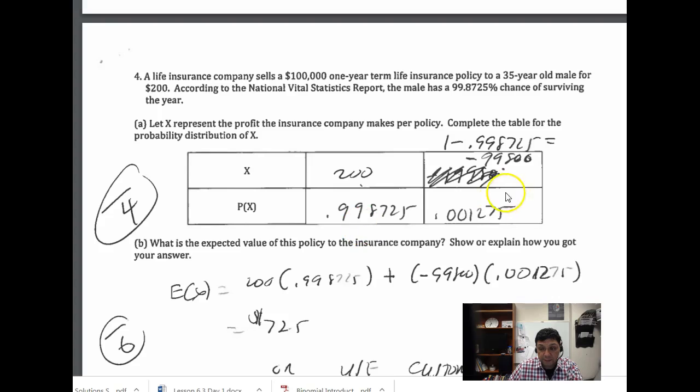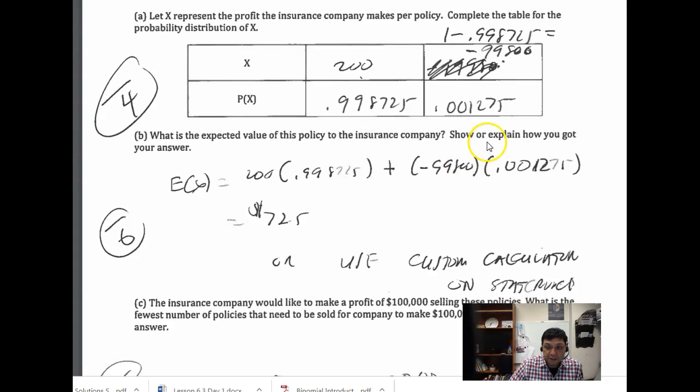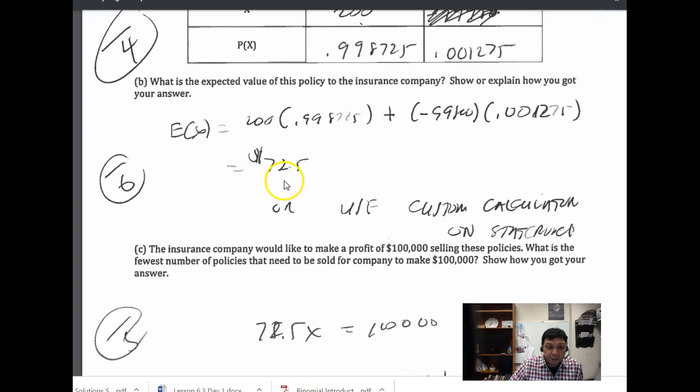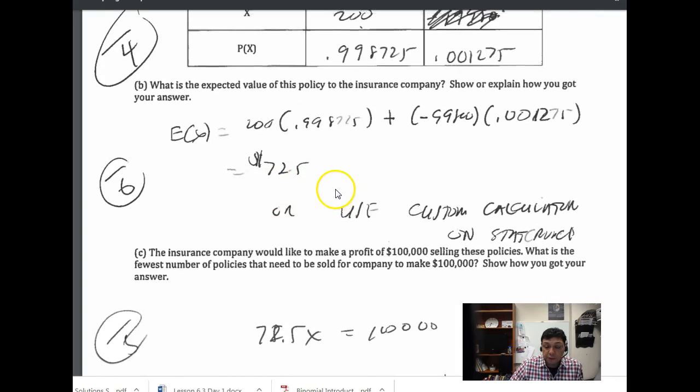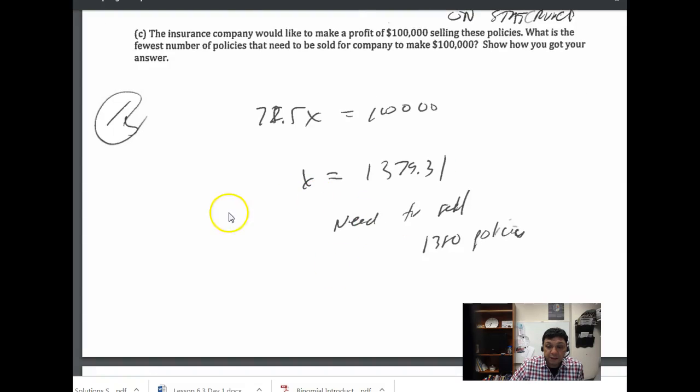And then it loses negative $99,800 this percent of the time. To calculate expected value is just X times P(X), X times P(X). Again, this number comes from 1 minus that gives you that number. So when you do that, the company makes $72.50 per policy. And if they wanted to make a profit, that's $72.50 times 100,000 policies - it needs to sell about 1,380.